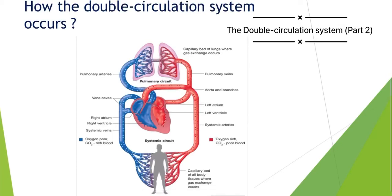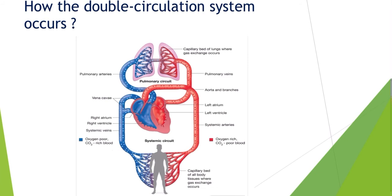Hi everyone, today we are going to talk about the concept of double circulation. In our last video we talked about all the tissues existing in the heart, how they work, and a brief introduction about the two circuits — pulmonary and systemic. Now we are going to use all those fundamentals to answer: how does the double circulation system occur?